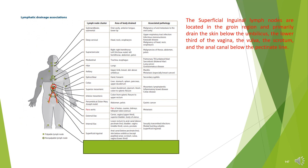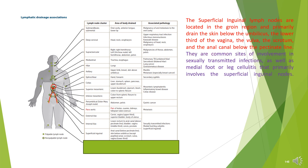Superficial inguinal lymph nodes. The superficial inguinal lymph nodes are located in the groin region and primarily drain the skin below the umbilicus, the lower third of the vagina, the vulva, the scrotum, and the anal canal below the pectinate line. They are common sites of involvement in sexually transmitted infections as well as medial foot or leg cellulitis.